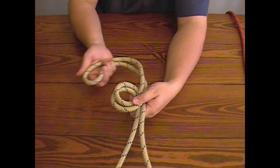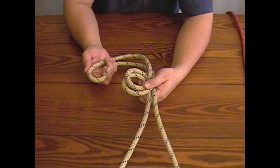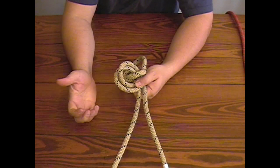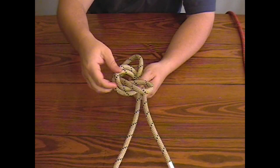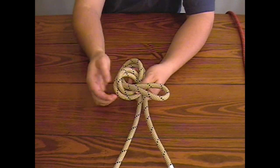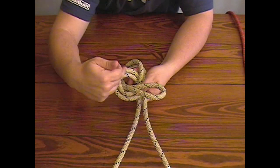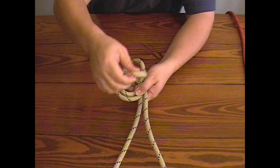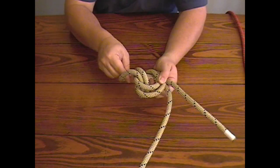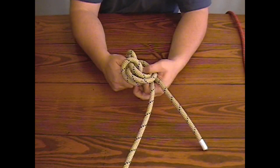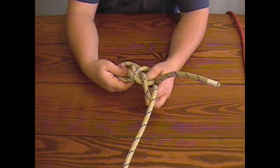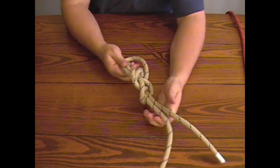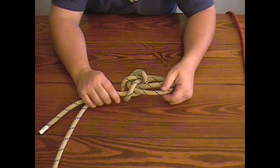Then I'm going to take the other end of the bite and I'm going to go up through that hole. Then what I want to do is take this bite back over itself and pull these two side lines through the bite. So I'm going to go over, grab the two side lines, and pull that through. That's the basic shape.